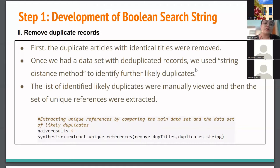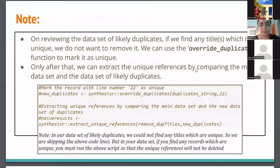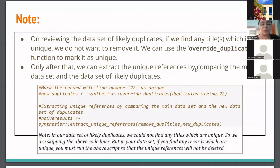The list of identified likely duplicates was then manually reviewed to check for any unique references that were extracted, to avoid mistakes. Because we had already used R to move to this step, we had very few records left to do manually. There is also an override duplicate function to mark an article as unique if needed, which was not applicable in our case, but I've included it as a reference for others working on their own systematic reviews.